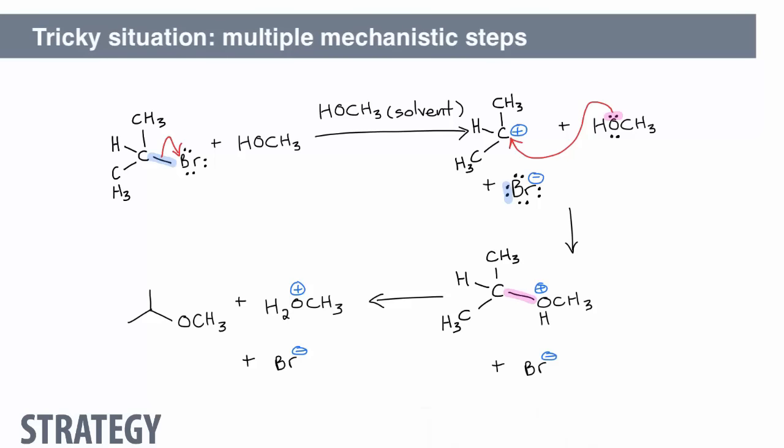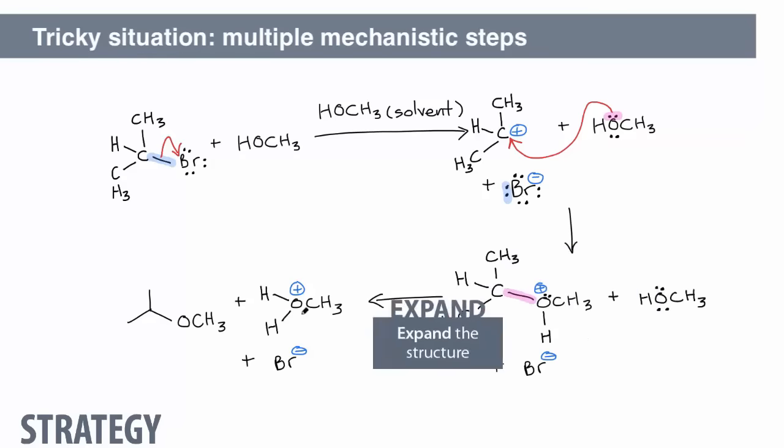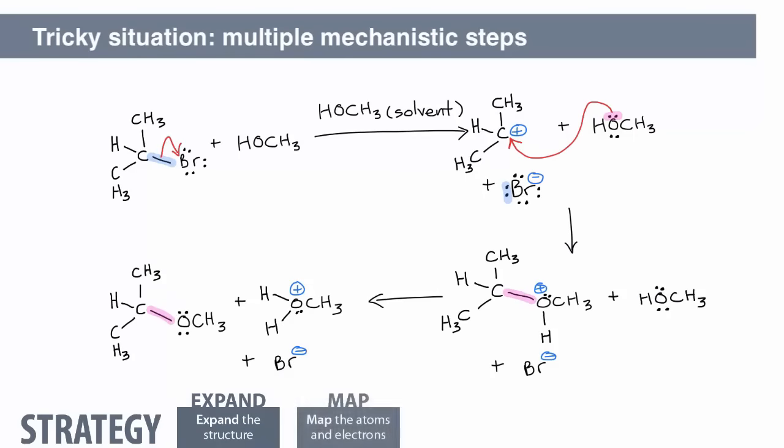What about the third step? In the third step, a molecule of methanol from the solvent, it's in large excess, forms a new bond between oxygen and hydrogen. The original HO bond breaks, and the oxygen receives the electrons, making it neutral.